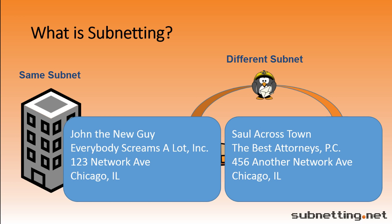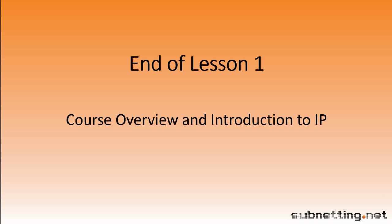This will be covered in more detail in the CCNA course, but for now the second way — for a different subnet — requires the use of a router to send the message. If you're sending messages inside your own subnet, you don't need a router. We'll get into subnetting and subnets in more detail in lesson 3. This is the end of lesson 1, which was a course overview and introduction to IP.